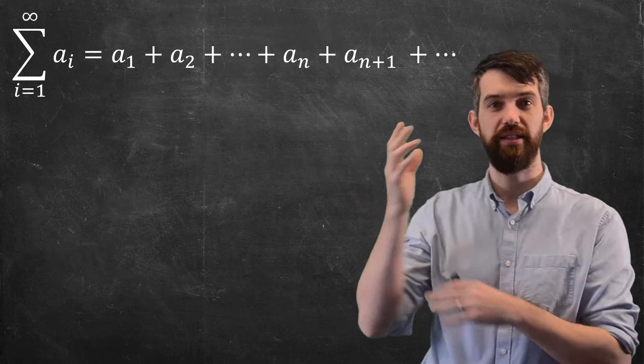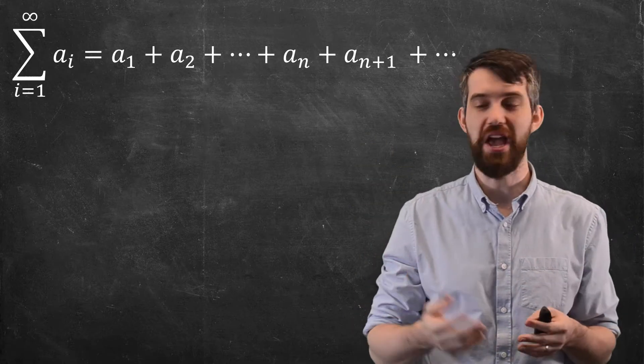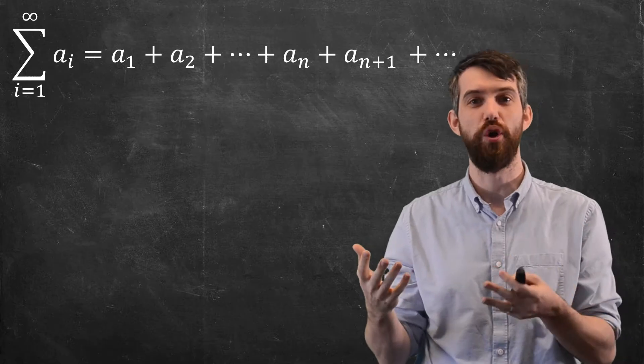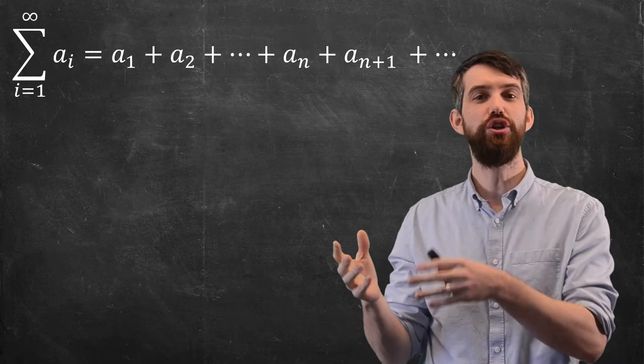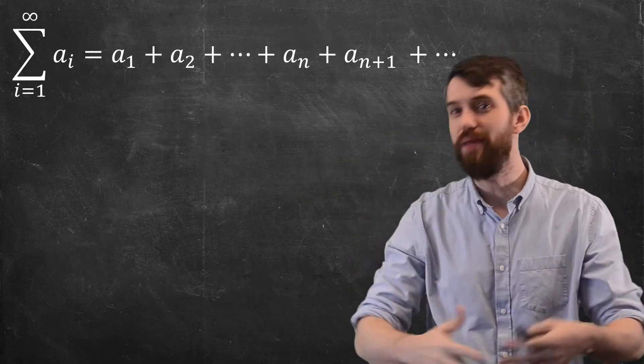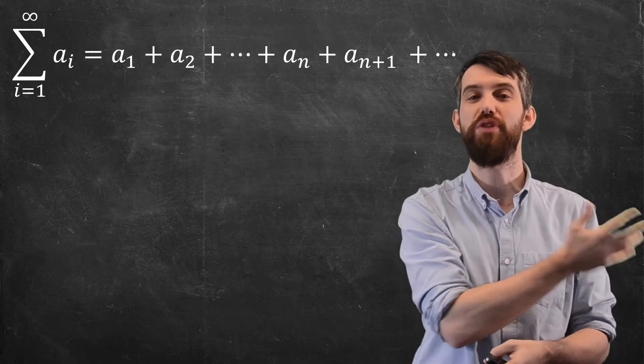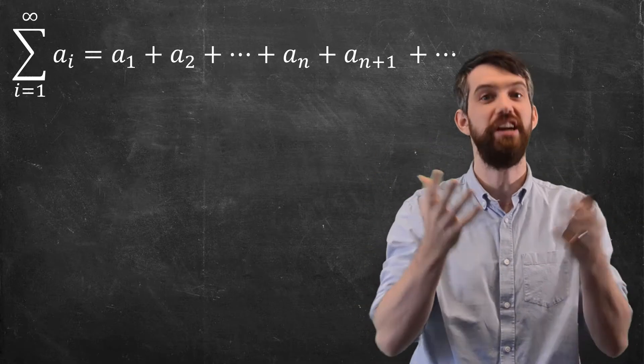Consider this particular series, the sum of the AIs. I've written it out in a bit of a funny way. I've written A1, A2, A3 as normal, but instead of just writing dot dot dot, I go A1, A2 all the way up to AN, and then I write AN plus 1, and it keeps going AN plus 2, AN plus 3, and dot dot dot goes on forever. I've sort of pulled out the AN term and written it explicitly.